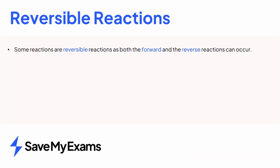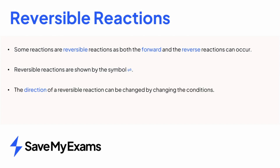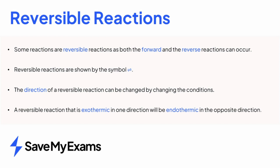In summary, many reactions are complete reactions, but some reactions are reversible, as both the forward and the reverse reaction can occur. Reversible reactions are shown in equations by the use of the reversible symbol. The direction of a reversible reaction can be changed by changing the conditions. A common example is when hydrated salts are heated: the forward reaction occurs and the anhydrous salts and water are formed, which can be reversed by adding water. If a reversible reaction is exothermic in one direction, it will be endothermic in the other direction, and the amount of energy transferred will be the same in either direction.